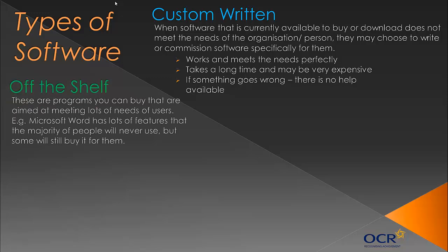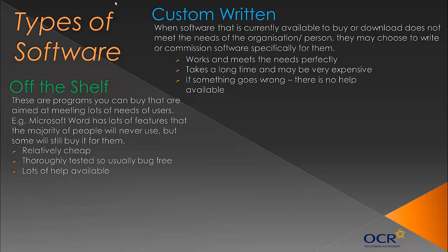Another type is off-the-shelf software — programs you can buy that are aimed at meeting lots of users' needs. Essentially, they try to please everyone. Microsoft Word has hundreds of features, but you might only really use 10 or 15. They're designed as generic software to suit everyone — examples include Microsoft Word, PowerPoint, and Photoshop. They're not custom written. They're relatively cheap because lots of people buy them, there's huge demand. They're thoroughly tested and usually bug-free, made by big companies like Microsoft, and there's lots of help available — FAQs, help sections, or even phone support.